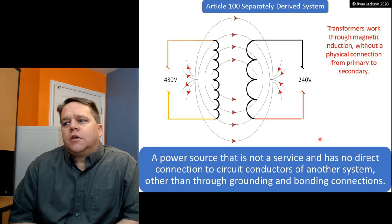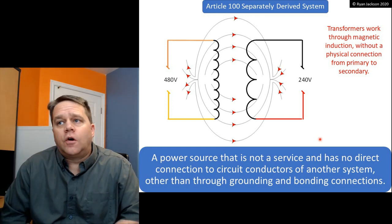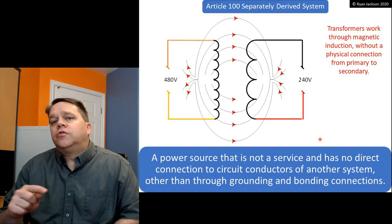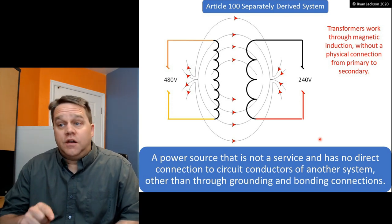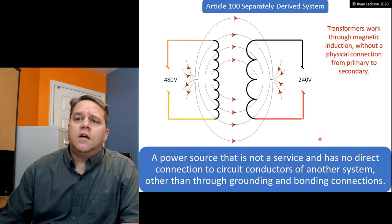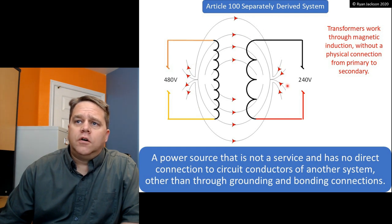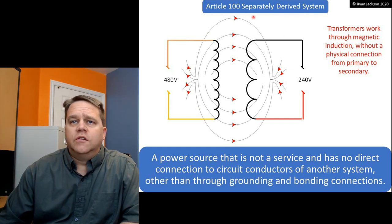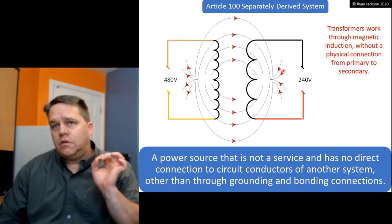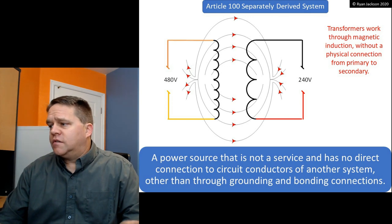A closer definition comes from Article 100 — the definition of a separately derived system. That is a power source that is not a service (so it's not a utility), and it has no direct connection to circuit conductors from another system, other than through grounding and bonding connections or through the earth itself. The concept here is magnetic induction. On the left we have the primary, on the right the secondary. We energize a coil of wire on the left, and that induces a voltage and current on the coil on the right — no direct electrical connection. So it is a separately derived system.